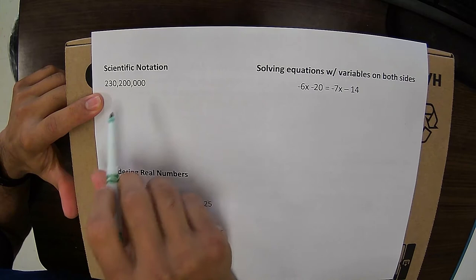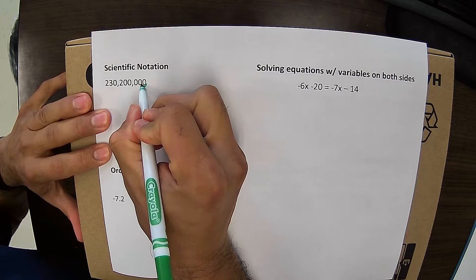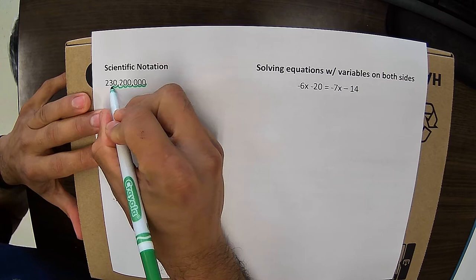Here we have a very large number. If we want to convert to scientific notation, I'm going to start here at the right. I'm going to go forward 1, 2, 3, 4, 5, 6, 7, 8 spaces.